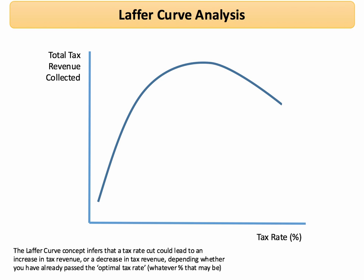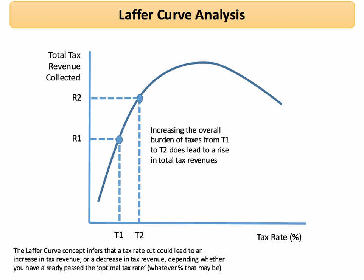Here's a conceptual Laffer curve. You don't necessarily need to draw tax rates of 0% and 100% — it's more realistic to think of tax rates within a positive range. For example, if we increase the tax rate from t1 to t2, starting at relatively low tax percentages, then we might expect to see an increase in the total tax revenue, and indeed that's shown on the curve.